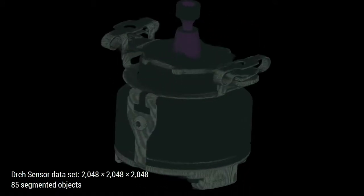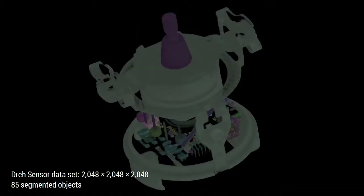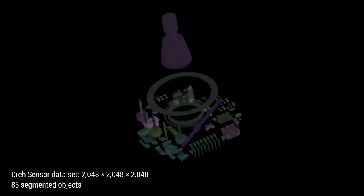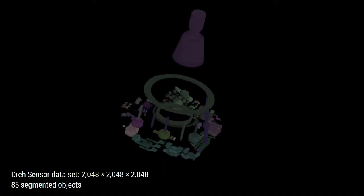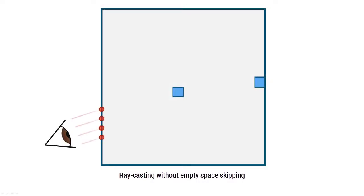We target volume datasets with many segmented objects, which users can quickly switch on and off interactively during analysis. This requires that the data structure used for empty space skipping can adapt well to these changes.